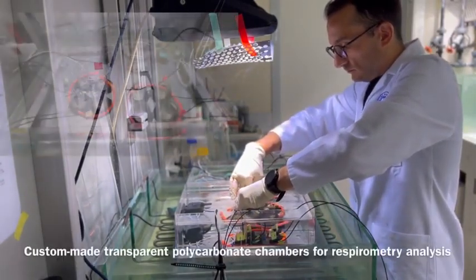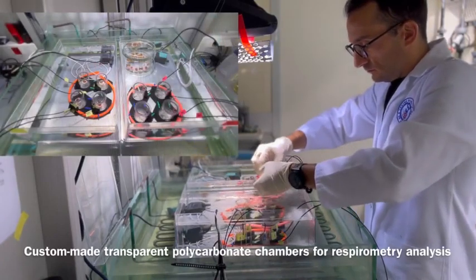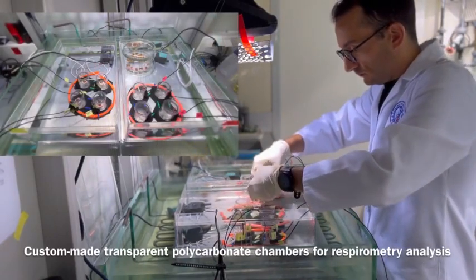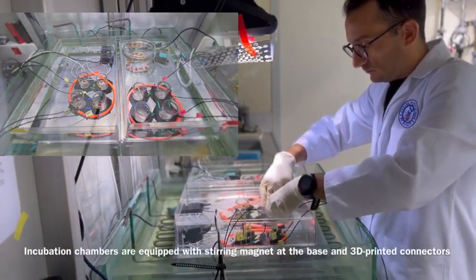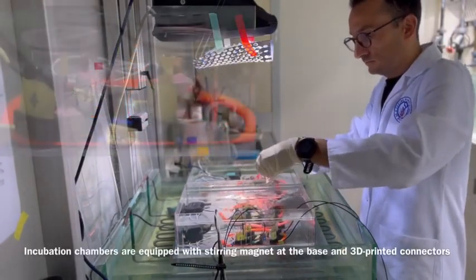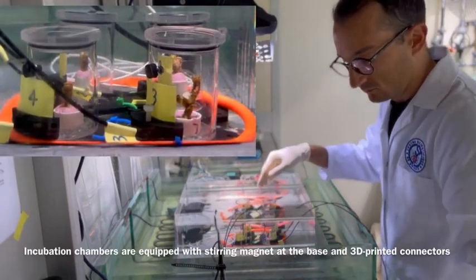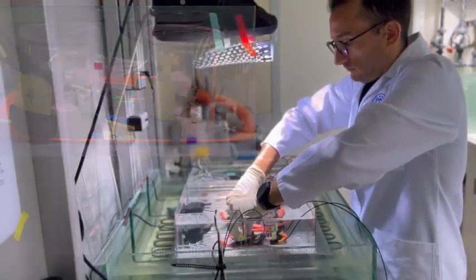Custom-made chambers were created from transparent polycarbonate to suit the distinct coral morphologies and align with our experimental design. These chambers, with a volume of approximately 50 ml, were equipped with a steering magnet at the base, facilitating the water circulation within.